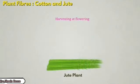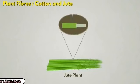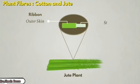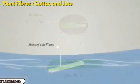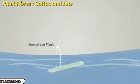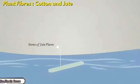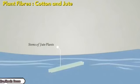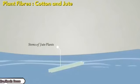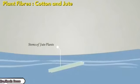They tie the stem outer cover and put it in slow-flowing water for five days. Then they take it out — it will become loose — and pull out the skin alone. That skin is what is needed for making jute fiber. This process of extracting jute fiber from the plant is called retting.